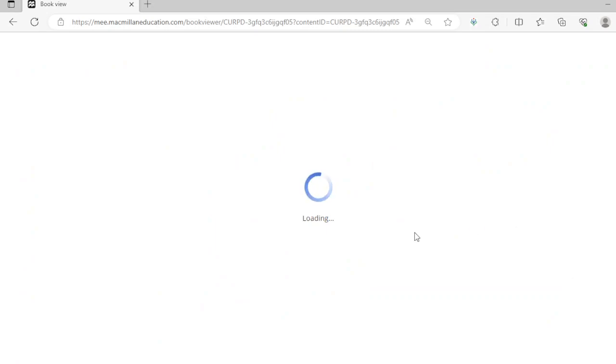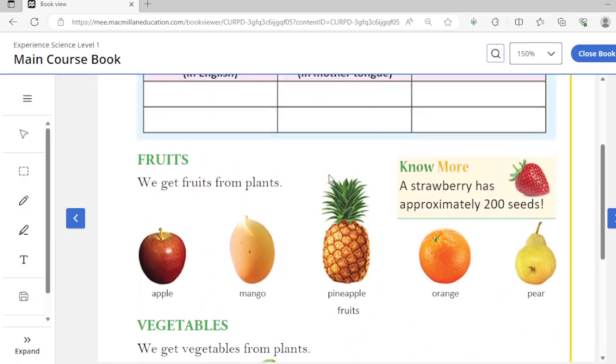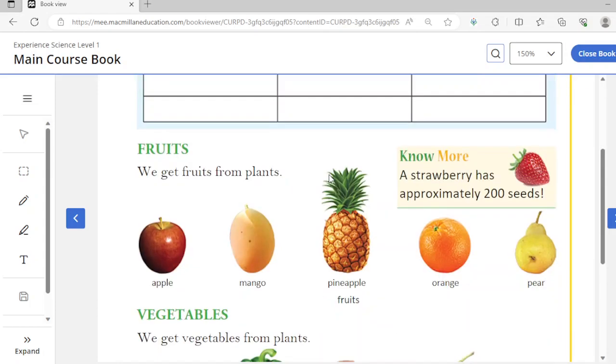Besides cereals and pulses, what else do we get from plants? Well, fruits. We get fruits from plants like apple, mango, pineapple, orange, pear. All these fruits come from plants. You know, a strawberry has approximately 200 seeds. Great!